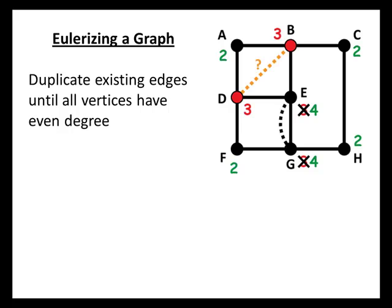Now, you might be tempted to try to draw a new edge from B to D. That would fix B, turn its degree from 3 to 4, and it would also fix D. The problem with that is that that's not an existing edge. Remember that when we finish Eulerizing our graph, any Euler circuit on our new modified graph should translate back into a circuit on our original graph that involves retracing those edges that we duplicated. But we can't retrace an edge that isn't there, so we can't do that.